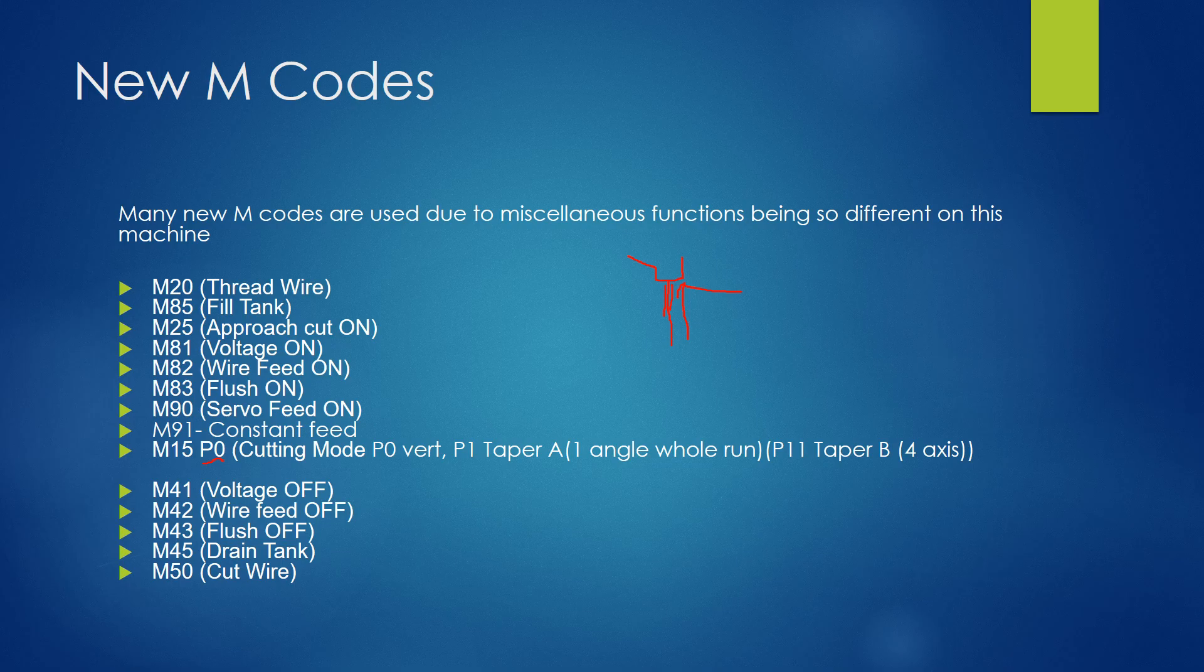And then if I wanted a four axis part where I'm enabling my U and V, so that my upper head runs completely independently of my lower head, I'm going to turn on a P11, which is called taper B and that's going to be in full four axis mode then. So that's what we need to have at the beginning of our program.